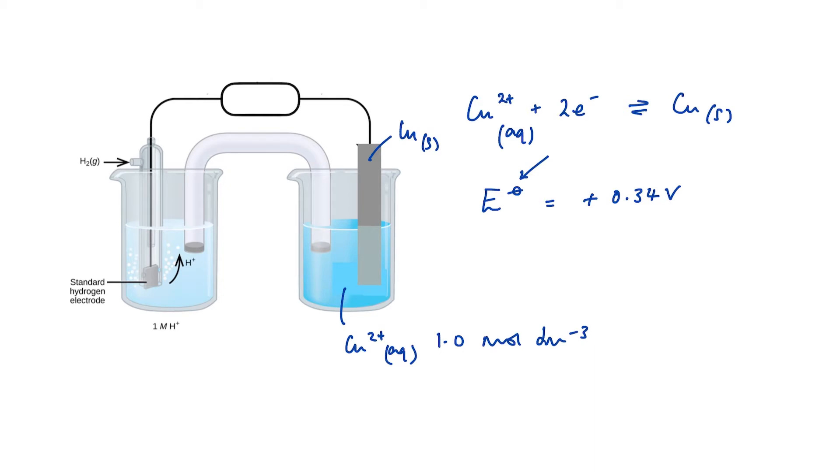When we're talking about non-standard conditions, generally speaking, what we're talking about are solutions where the concentration is not 1.0 mole per decimetre cubed. So for example, what would happen if we decrease the concentration of copper ions?